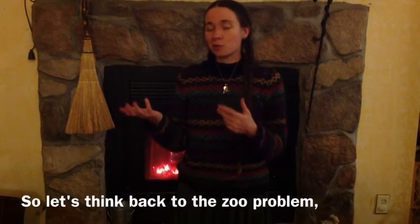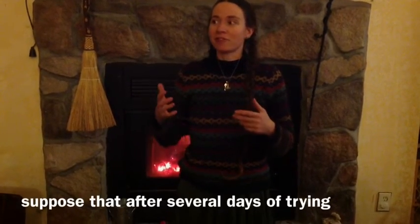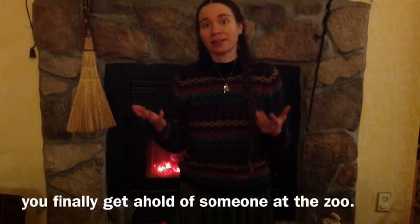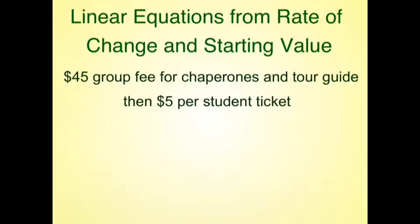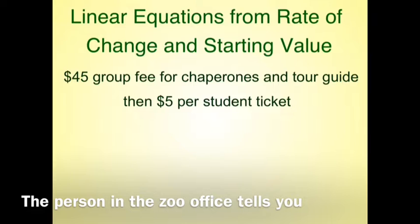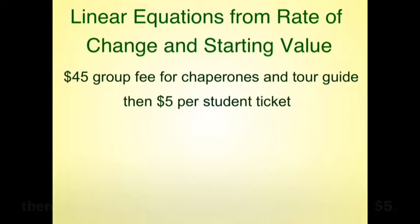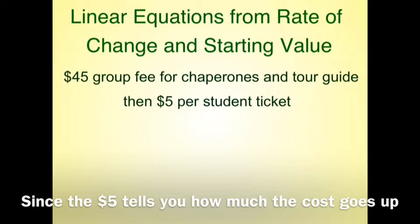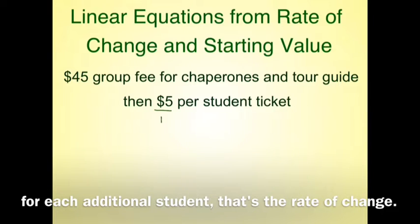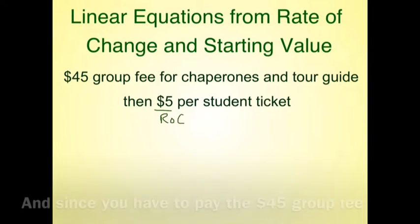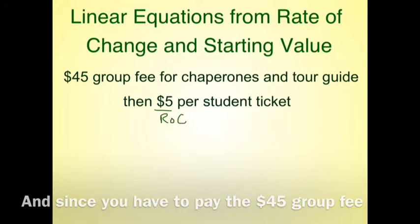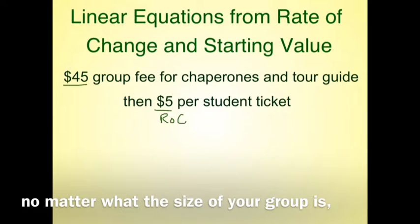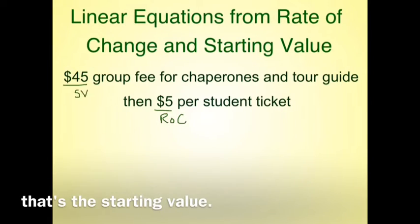Let's think back to the zoo problem. Suppose that after several days of trying, you finally get a hold of someone at the zoo. The person in the zoo office tells you there's a $45 group fee and that student tickets cost $5. Since the $5 tells you how much the total cost goes up for each additional student, that's the rate of change. And since you have to pay the $45 group fee no matter what the size of your group is, that's the starting value.